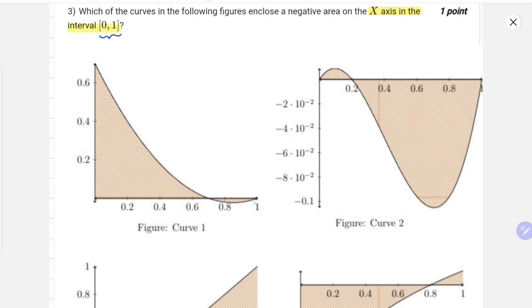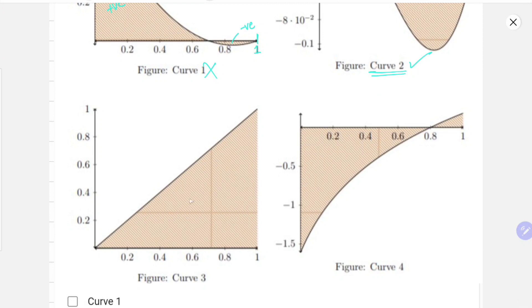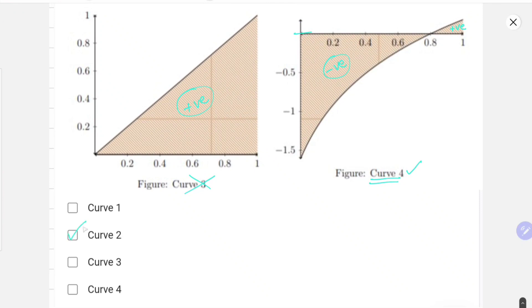In the first graph, the graph is limited at 1. We have to take the total area, and you can clearly see that the positive area is far greater than the negative area, so this won't be our answer. In the second figure, you can clearly see the negative area is far greater than the positive area, so curve 2 will be our answer. In curve 3, you can clearly see all the area is positive, so this also cancels out. For curve 4, you can clearly see that most of the part of the area is in the negative region and a very small part is in the positive region. So curve 4 will also be our answer. Our answer comes out to be curve 2 and curve 4.